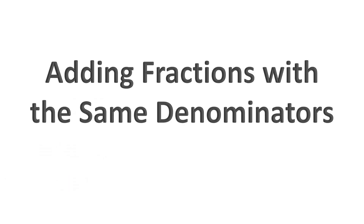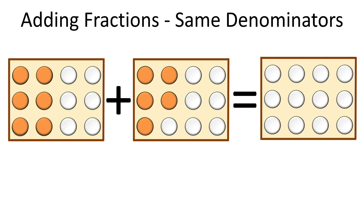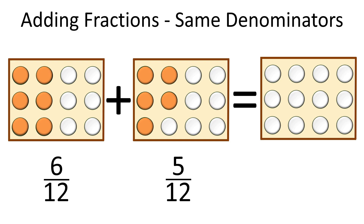Let's talk about adding fractions with the same denominators. We have two boxes with oranges. In the first box we have 6 oranges, but there is space in the box for 12 oranges, so we can write it as 6 twelfths. The second box has 5 oranges, but there is space for 12 oranges, so we can write it as 5 over 12.